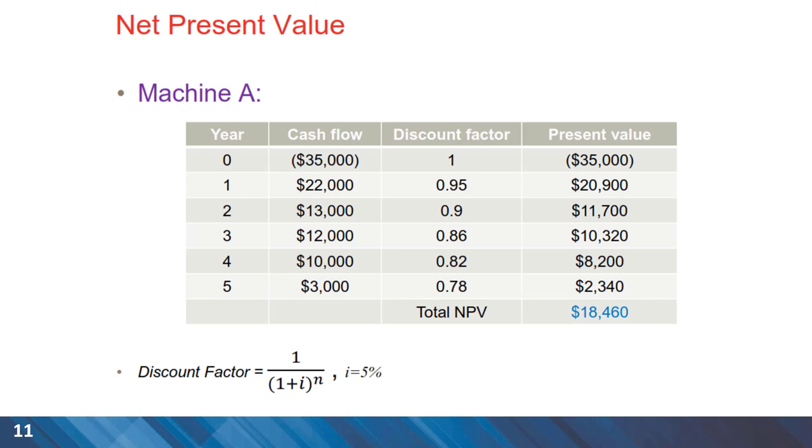We can apply that formula to our example for Machine A. In year 0, the discount factor using the formula is equal to 1 because n equals 0. For year 1, it's 0.95, and when we go further, the discount factor changes. For year 5, for example, it is 0.78.